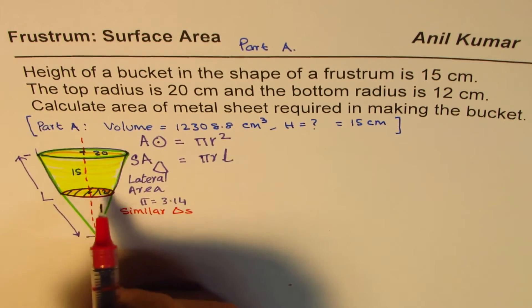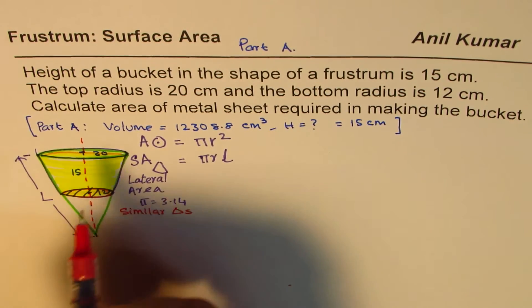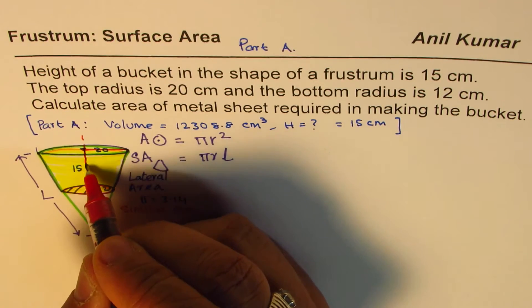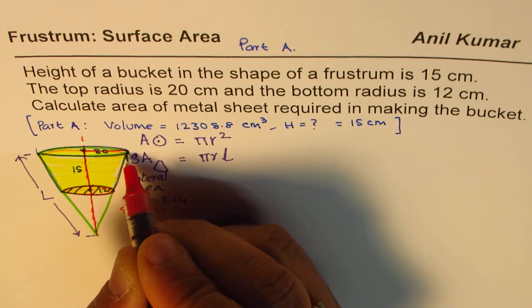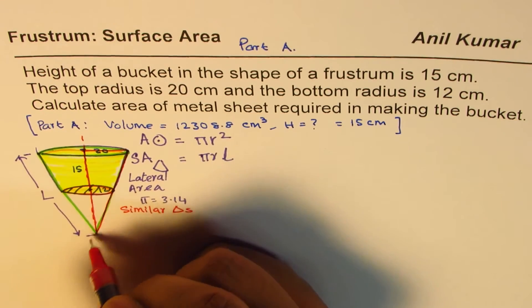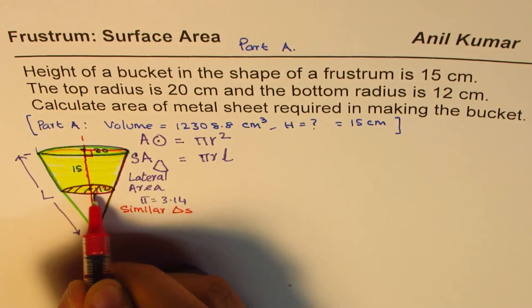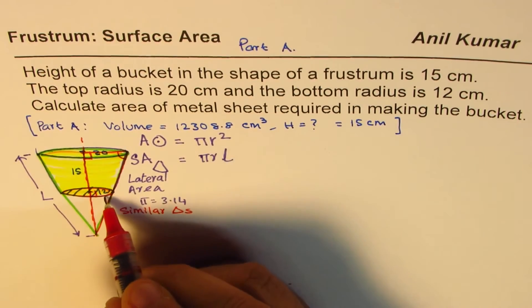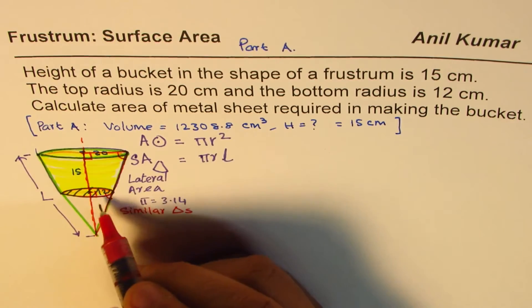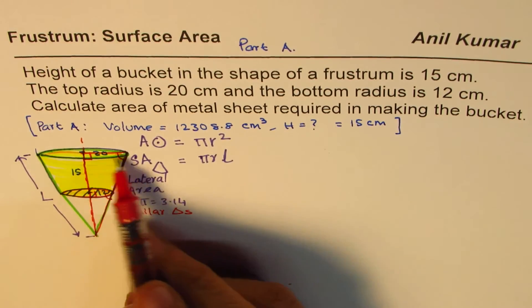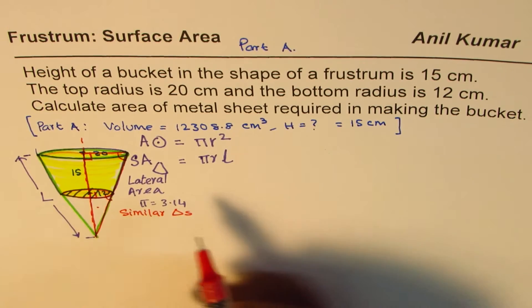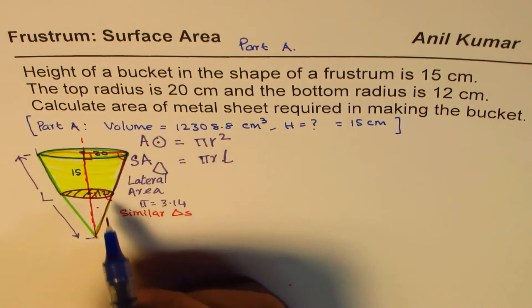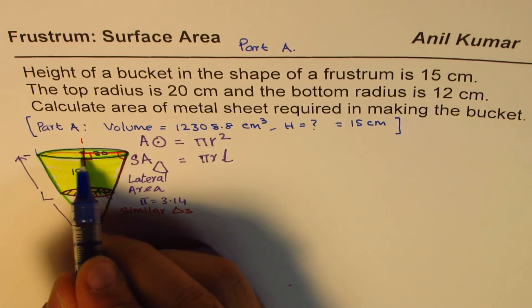In similar triangles, we'll consider the big triangle formed by the full cone. The right angles are 90 degrees, and by the AA property, the big triangle and the small triangle are similar. So the ratio of their sides is constant.